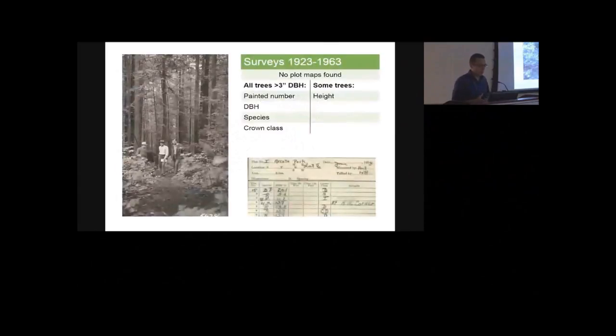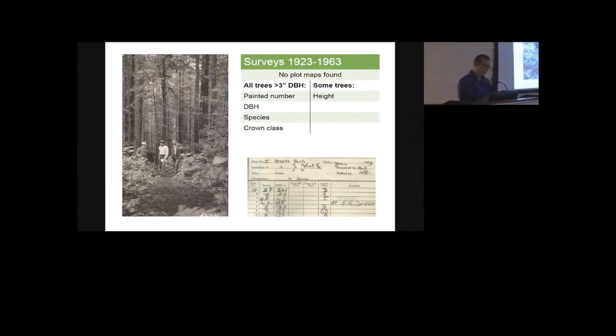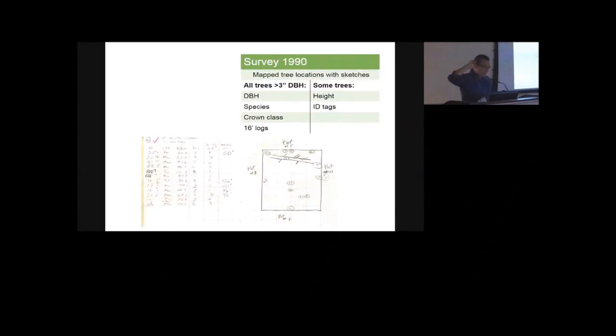So moving on to the surveys that were completed. The 23 to 63 surveys were pretty straightforward. They collected DBH, species, and crown class for all the trees over three inches in diameter. They collected height measurements for some of the trees but not all of them in a fairly haphazard way. And you can see on the bottom of the slide there one of the original data sheets from 1923 that we were able to transcribe from. And that's a picture from 1923 as well of the people working in the plot. The survey in 1990 was fairly similar. DBH, species, crown class. Again, height for only some of the trees. Luckily for us, they did draw maps of the tree locations, as you can see on the slide there, unlike the previous surveys, which allowed us to link up a lot of the trees in the plot more easily.